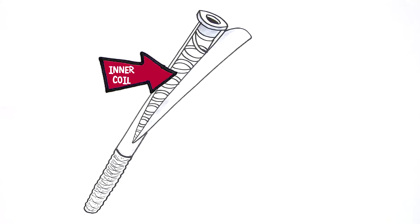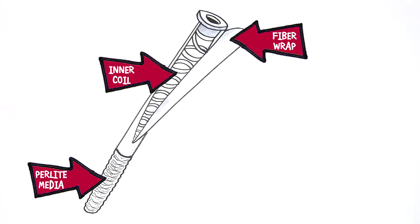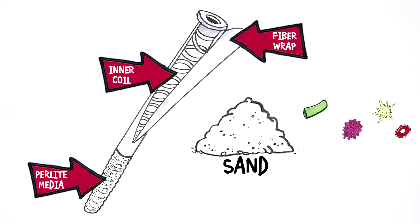Flexible spring coil tubes in the unit are wrapped with a polyester weave that gets coated with perlite media. Compared to depth filtration with sand, surface filtration with perlite removes particles down to 1 versus 20 microns.